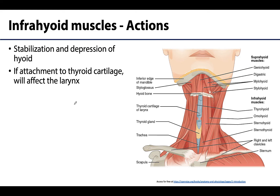Based on the location of the muscles and their attachments, it becomes intuitive what these muscles do when they contract. Mainly, they serve to depress or lower the hyoid when they contract. Also importantly, they can keep the hyoid bone steady to allow specific actions like swallowing and speaking to occur efficiently. If a muscle has an attachment on the thyroid cartilage of the larynx, it can play a role in either elevating — like the thyrohyoid — or depressing — as with the sternothyroid muscle — the larynx.